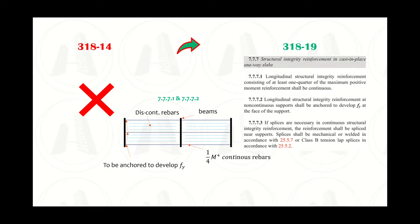Articles 7.7.1 and 7.7.2 have been graphically represented here. Article 7.7.3 deals with the splices of continuous structural integrity reinforcement. The reinforcement should be supplied near supports, and splices shall be Class B tension lap splices or mechanical or welded splices as per section 25.5.